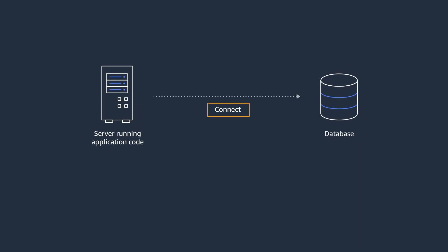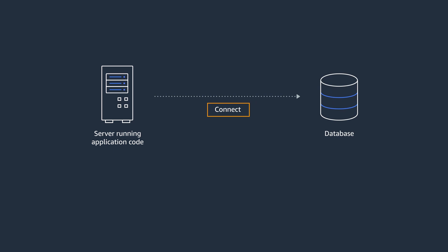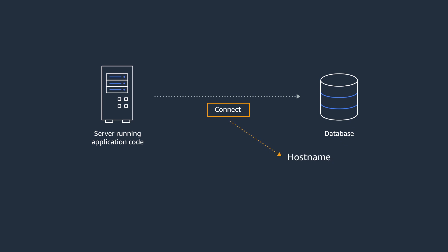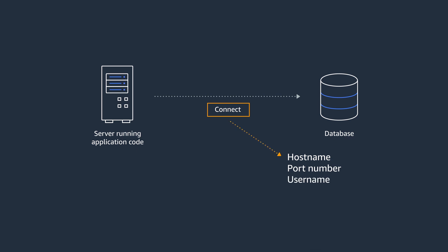Let's take a common scenario. You have an application that needs to communicate with the database. So to open a connection to the database, it needs database connection information like the database server name, database port number, and secrets information like database username and database password.